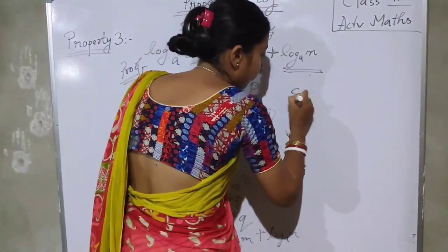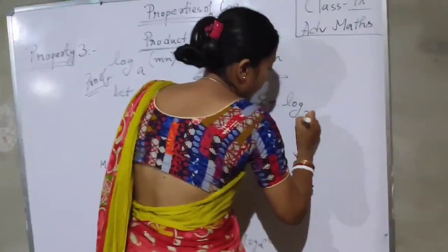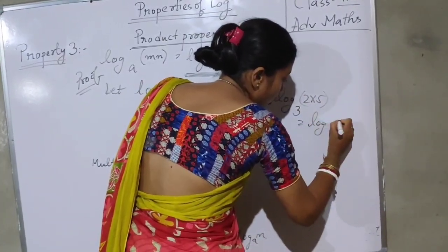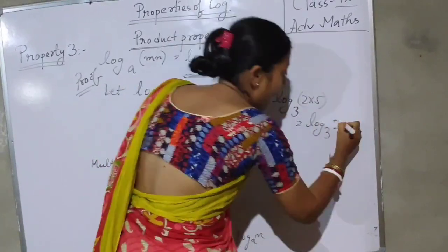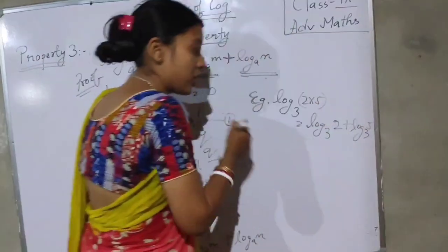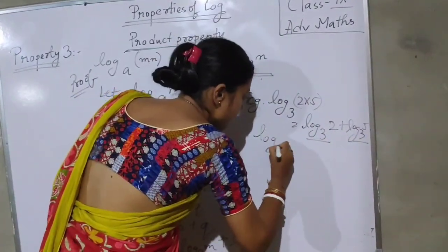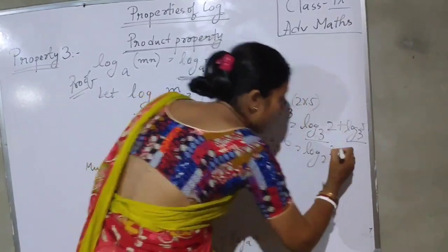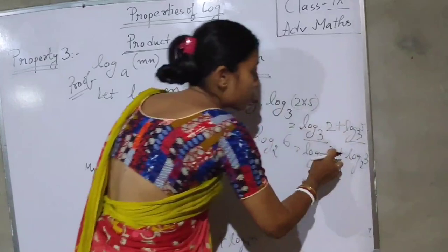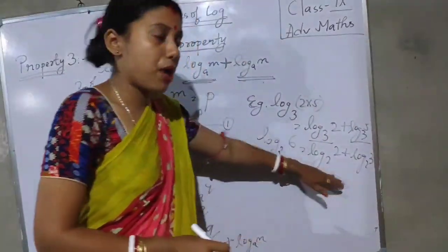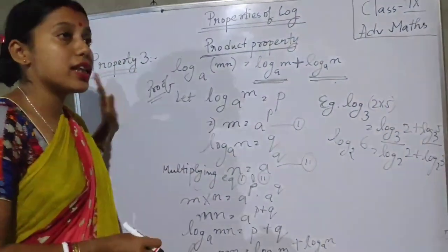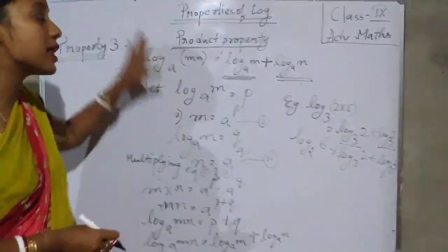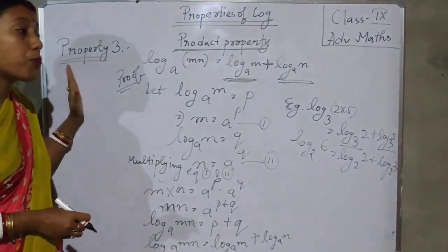Let me show you some examples. Suppose log base 3 of 2 times 5: 2 times 5 is 10, and we can split it as log 2 base 3 plus log 5 base 3. If it is log 6 base 2, then we can write log 2 base 2 plus log 3 base 2, since 2 times 3 is 6. This property is very important to solve most of the questions. Remember this property, we need it most of the time.